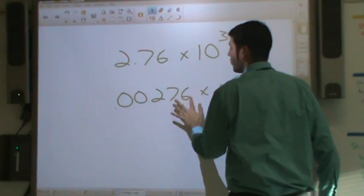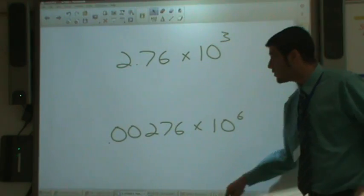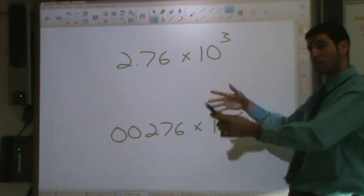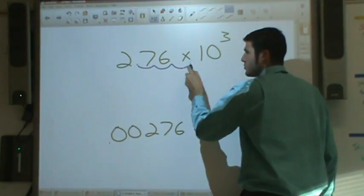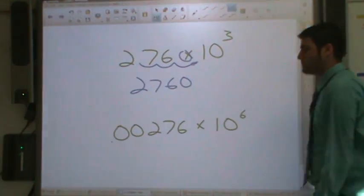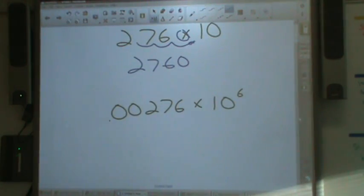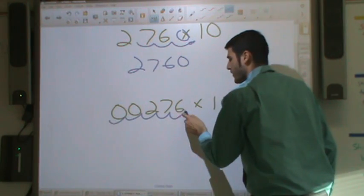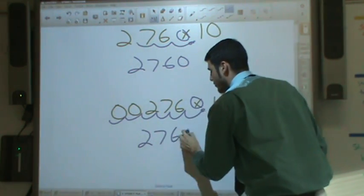Let's go ahead and take a look at, well, what do I mean when I say that? Well, if we go ahead and we move the 2.76 over 3, because it's 10 to the third and it's a positive 3, so we're going to move it over to the right. If I move that over 3, 1, 2, 3, I get 2,760. Now let's take a look at the bottom one. If I move that over 6, 1, 2, 3, 4, 5, 6, it is still 2,760.